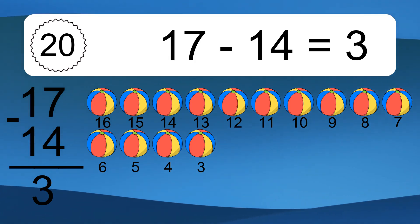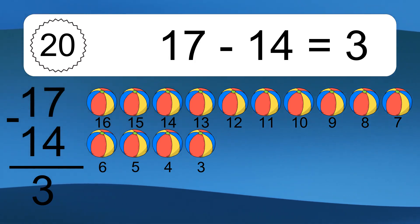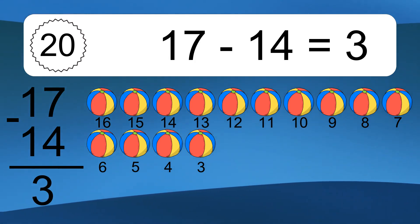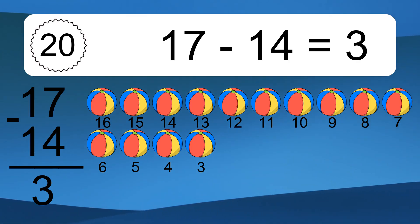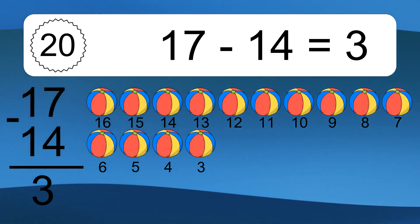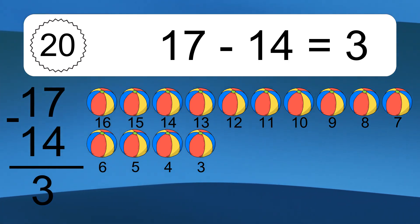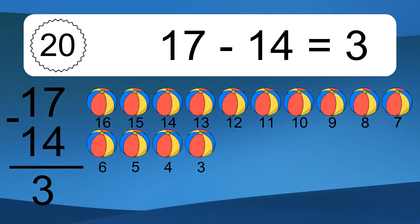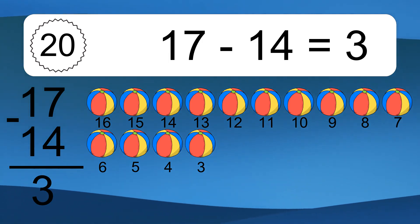17 minus 14 equals what? Let's count it. 16, 15, 14, 13, 12, 11, 10, 9, 8, 7, 6, 5, 4, 3.